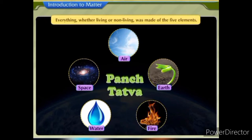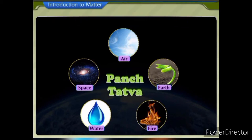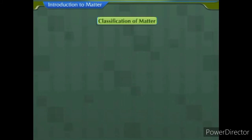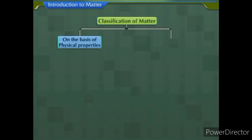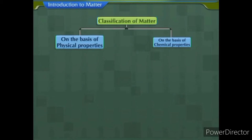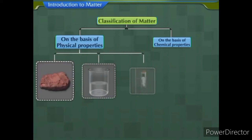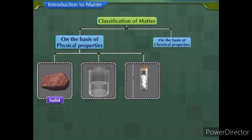According to them, everything, whether living or non-living, was made of these five elements. Modern day scientists have classified matter on the basis of their physical and chemical properties. On the basis of physical properties, matter can be classified as solids, liquids and gases.